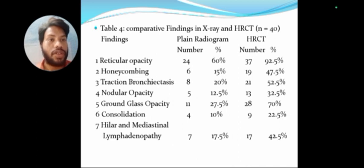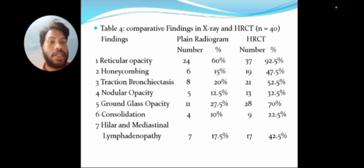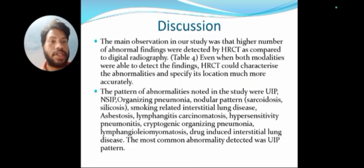In the comparative study, reticular opacity was detected in 60% on DR and 92.5% on HRCT. Honeycombing was found in 6% on DR and 47.5% on HRCT. Traction bronchiectasis was found in 52.5% on HRCT.